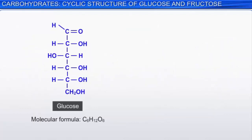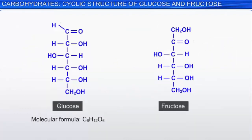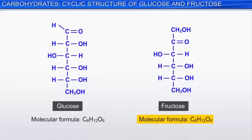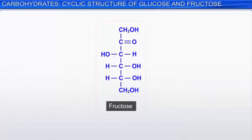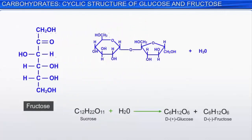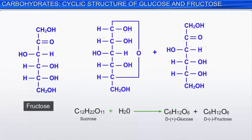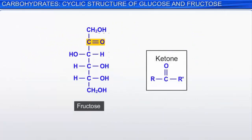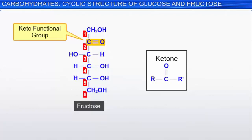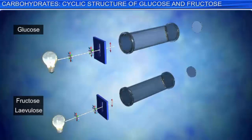Let's direct our attention to the functional isomer of glucose — fructose, another important monosaccharide. Like glucose, fructose has the molecular formula C6H12O6. Fructose is readily soluble in water and is the sweetest of all sugars. It is obtained by the hydrolysis of sucrose with glucose. Certain characteristic reactions of fructose show that it is a ketone, consisting of six carbon atoms in a straight chain, with the keto functional group at position 2 of the carbon chain. Unlike glucose, fructose is observed to be levorotatory — it rotates plane polarized light towards the left. An old name for fructose is levulose.